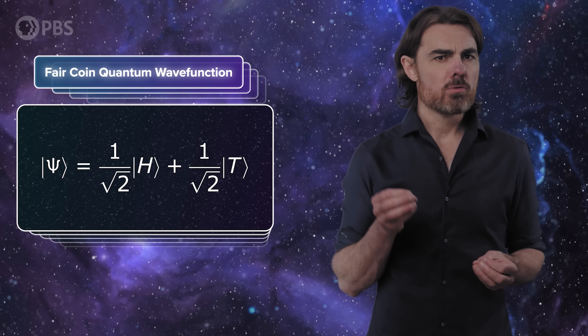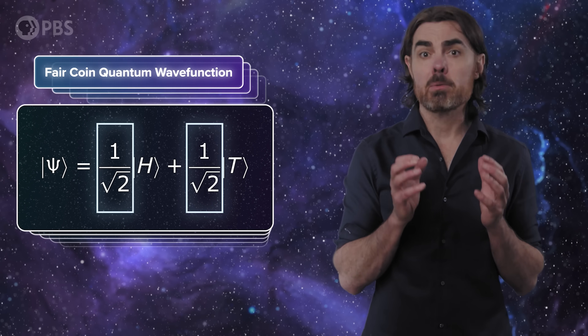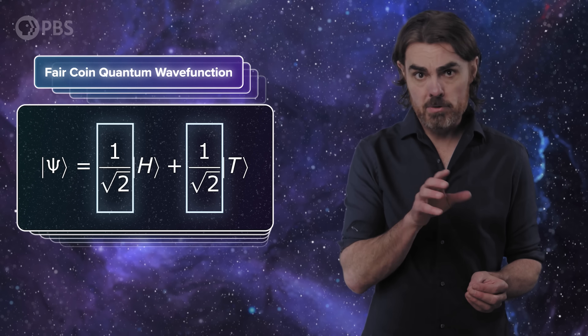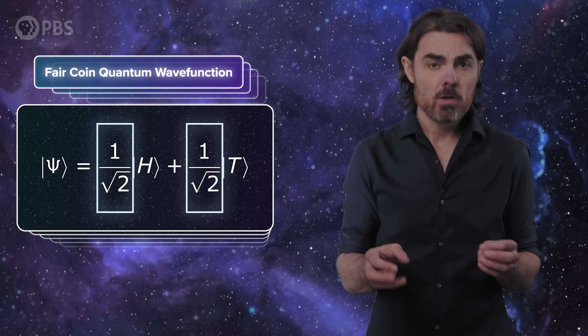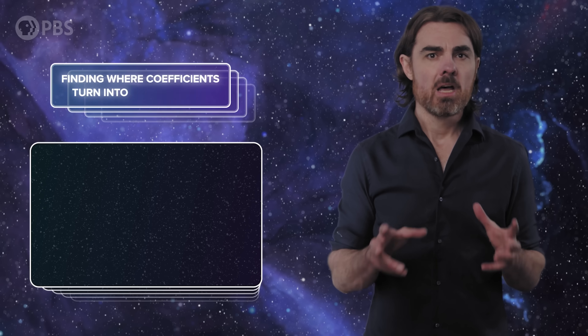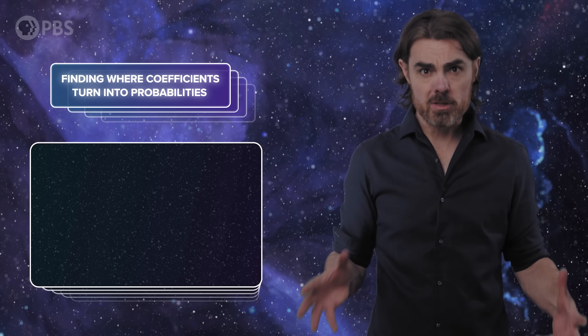If we're committed to the coefficients defining the probabilities — which honestly we don't have a good reason for just yet — then the Born rule is the only way for those probabilities to be equal for equal coefficients. But we can do better than this. We can show that the probabilities have to be governed by the coefficients and that the Born rule applies even if those coefficients aren't equal. Let's look at what happens when we measure our quantum coin to find the place where the coefficients turn into probabilities.